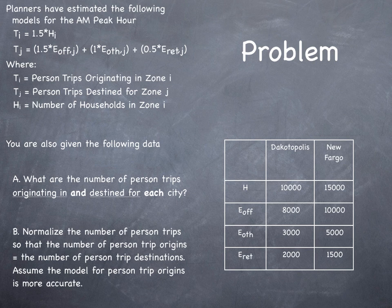First question is, what are the number of person trips originating in and destined for each city? Second, normalize the number of person trips so that the number of person trip origins equals the number of person trip destinations. Assume the model for person trip origins is more accurate. Pause the video and solve the problem.